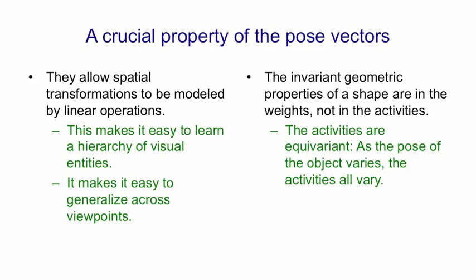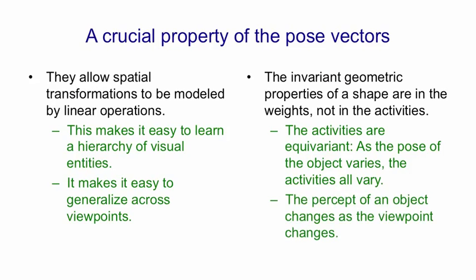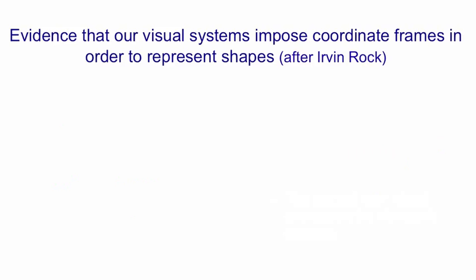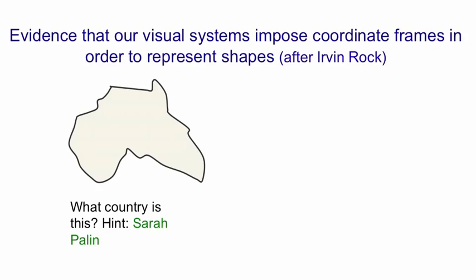I'm going to finish by giving you some evidence that our visual systems really do impose coordinate frames in order to represent shapes. This was pointed out a long time ago by a great psychologist called Irvin Rock. If you look at this shape and I tell you it's a country, most people don't know which country it is — they look at it and think it looks a bit like Australia, but a sort of mirror image of Australia. But it's not really a familiar country at all. If you tell them where the top is — that it's that way up — they immediately recognize that it's Africa. If they know what coordinate frame to impose on it, it immediately becomes a familiar shape.